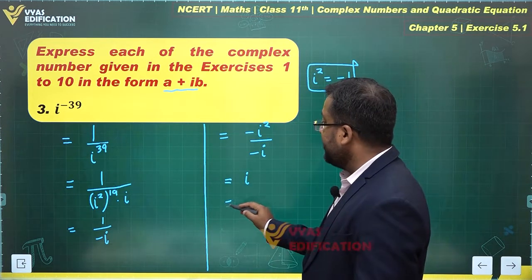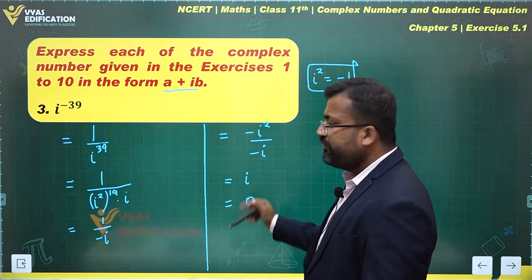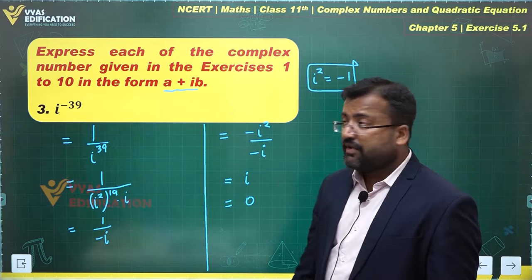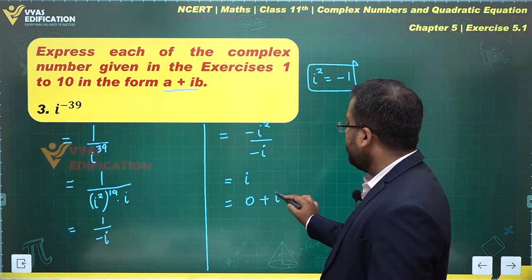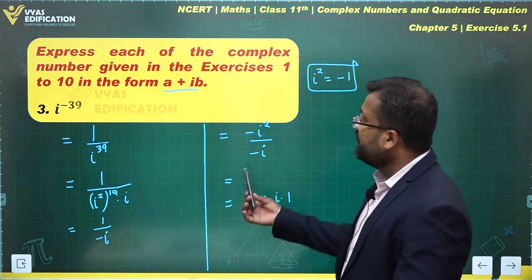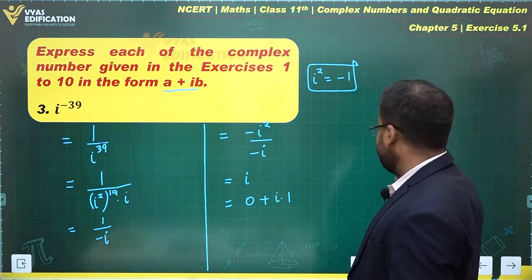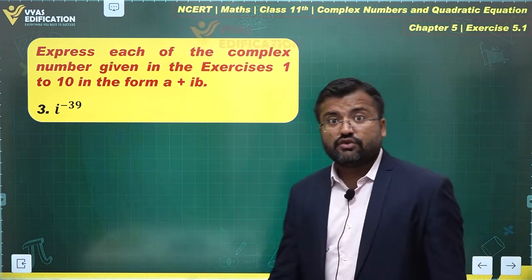But expressing it in the form a plus ib is what we're supposed to do. This complex number does not have any real part. The real part becomes 0 plus i times 1. This is the final a plus ib form that we were looking for.